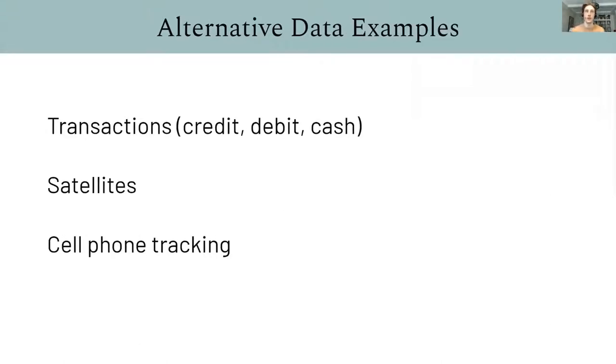The category of alternative data includes any alternative to direct disclosures from companies. Direct disclosures would be things like SEC filings or press releases. Instead, alternative data is side channel information about companies and tries to measure consumer spending and retail sales in a roundabout way.